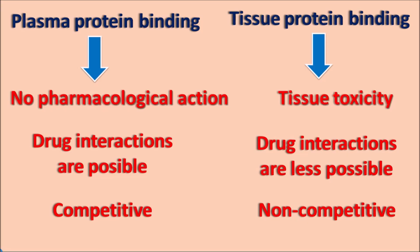So that's about protein binding. Protein binding mainly results in the distribution of the drug into the body. The drug can bind to the plasma proteins such that it is confined within the plasma, resulting in a low volume of distribution. Otherwise, the drug can have high affinity towards the tissue proteins so that it is more distributed into the extravascular tissues, where it can strongly bind with the tissue proteins, which can result in some tissue toxicity. So in case of high affinity towards the tissue proteins, the drug will have a high volume of distribution. In our next video, we will discuss about the kinetics of this protein binding — how the protein and drug interactions can be explained based on a few equations.